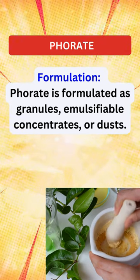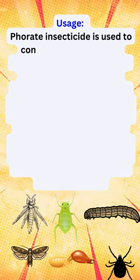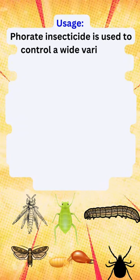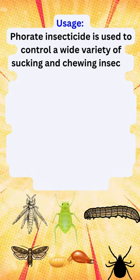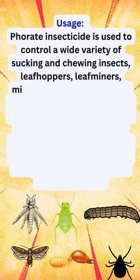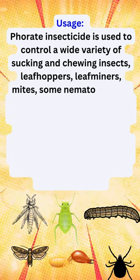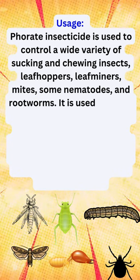Application. Forate insecticide is used to control a wide variety of sucking and chewing insects, leafhoppers, leafminers, mites, some nematodes, and rootworms.